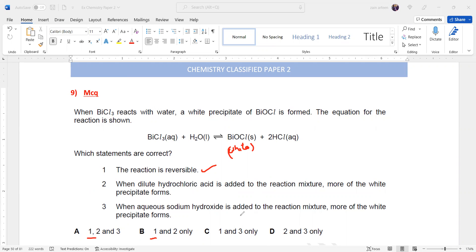When you check the second statement: when dilute hydrochloric acid is added, if I add more product, where will the balance shift? It will shift towards the left-hand side.